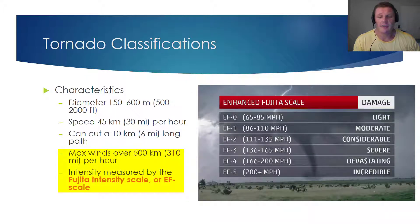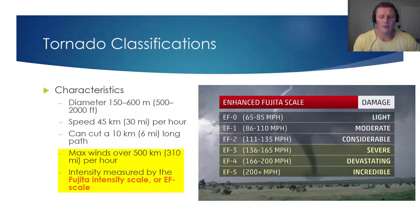Shown on the screen is the EF scale, the associated wind speeds, and the damage caused by tornadoes that fit each particular classification. Your EF0 tornadoes will have wind speeds between 65 and 85 miles per hour, and they will cause relatively light damage. Your EF1s and EF2s can cause moderate to considerable damage. But as you work your way to the EF3s, EF4s, and EF5s, the wind speeds are getting much higher, and the damage associated with these tornadoes is becoming more and more extensive.